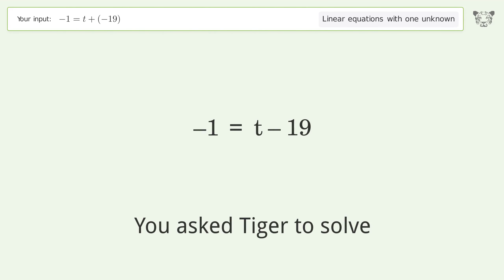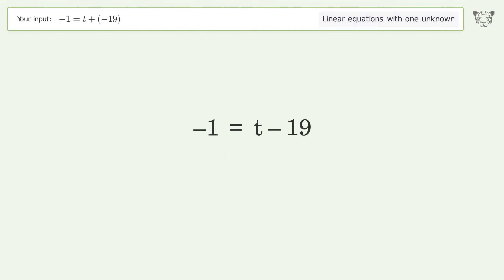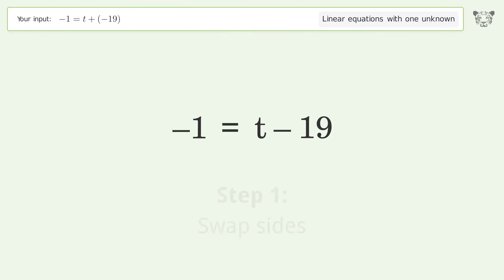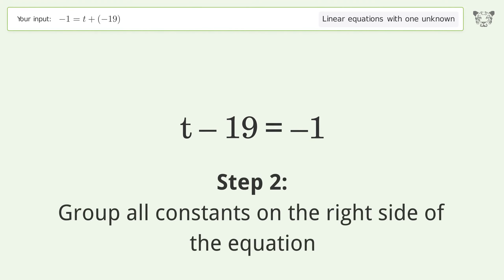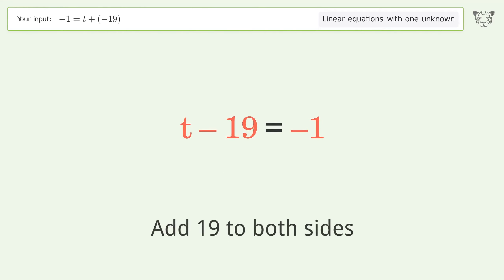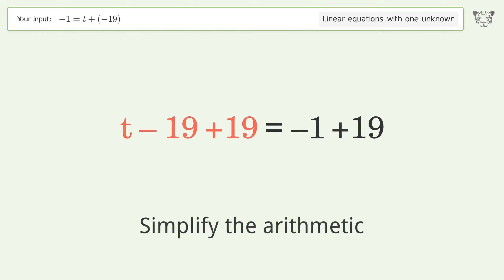We ask Tiger to solve a linear equation with one unknown. Let's solve it step by step: swap sides, group all constants on the right side of the equation, add 19 to both sides, and simplify the arithmetic.